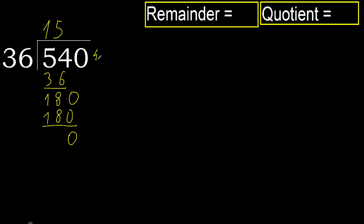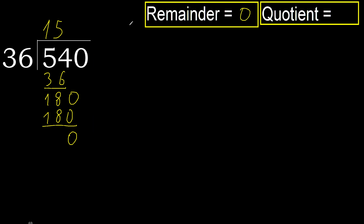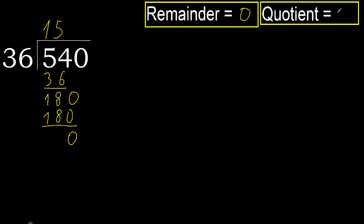Next, there is no number, therefore finish it. 540 divided by 36 is 15, okay.